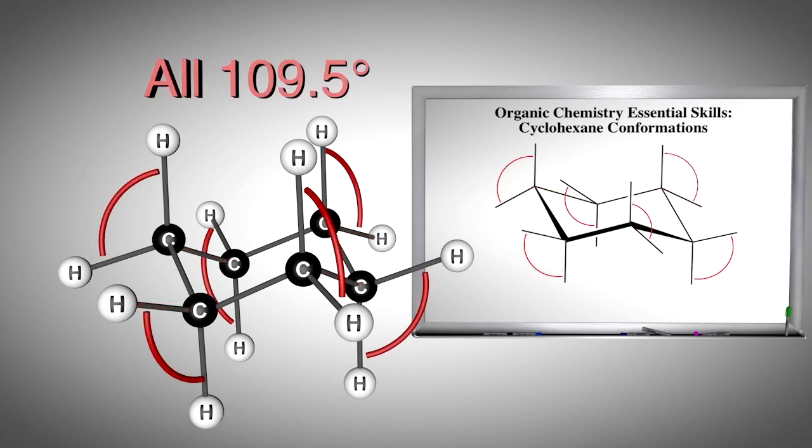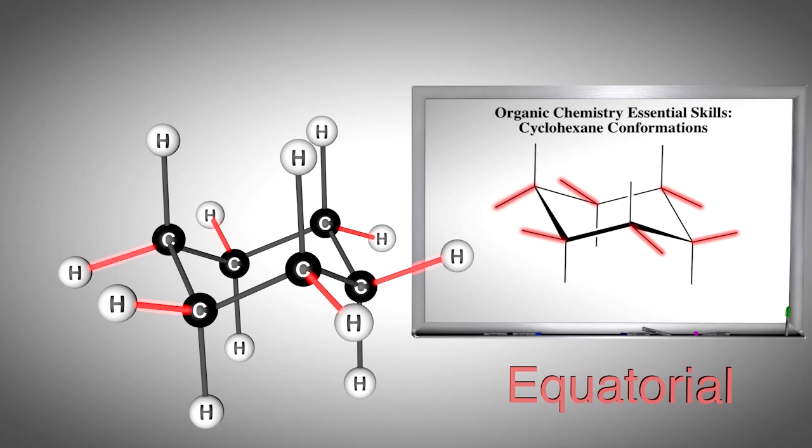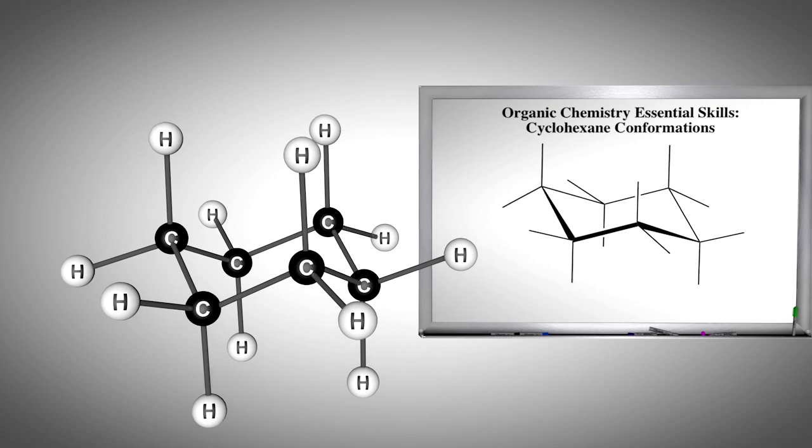Notice that the equatorial bonds all form 109.5-degree angles with the axial bond on the same carbon. In addition, there are six parallel axial positions on each carbon of the ring alternating up and down, and there are six equatorial positions around the ring, which adopt their names due to similar terms found on a globe.